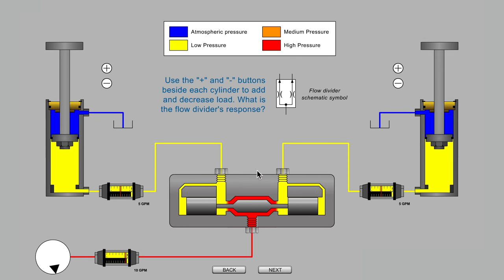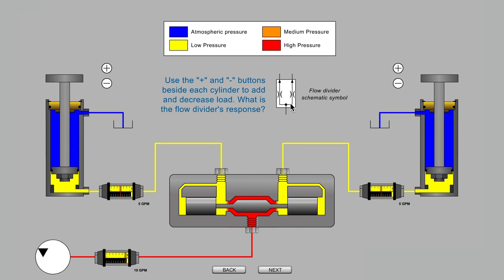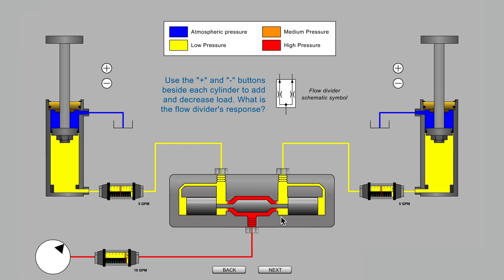Hello, this is Carl from lunchboxsessions.com. The spool type flow divider is a pressure compensated valve that, as shown by the symbol, can take one source flow and divide it into two parallel branches, but it does a lot more than a basic T fitting.